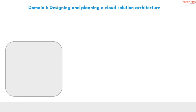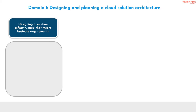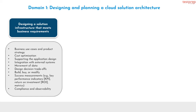Let us now discuss course outline topics in detail. Domain 1: designing and planning a cloud solution architecture. Number 1, designing a solution infrastructure that meets business requirements. It contains: first, business use cases and product strategy; second, cost optimization; third, supporting the application design; fourth, integration with external systems; fifth, movement of data; sixth, design decision trade-offs; seventh, build, buy, or modify; eighth, success measurements such as key performance indicators (KPI), return on investment (ROI), and metrics; ninth, compliance and observability.